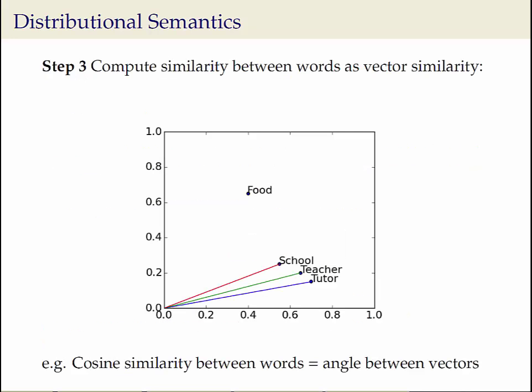These vectors can be thought of as representing each word in an n-dimensional Euclidean space. In this space, words that are closer to each other are more similar. In this figure, we show a toy example of four words embedded in a two-dimensional space. Teacher is close to tutor, but also relatively close to school. Food, on the other hand, is far away from all other words. The word similarity measure usually used is the cosine similarity, which represents the angle between the vectors joining the origin to the vector representations of the words.